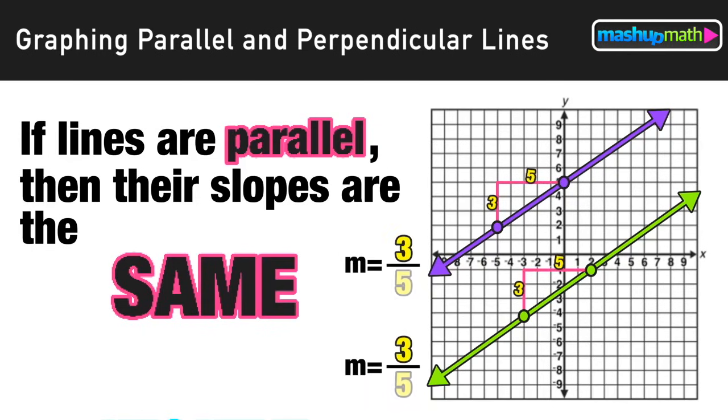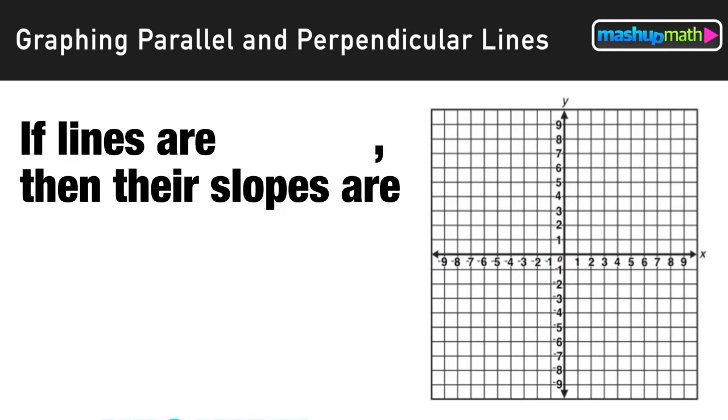Now since these lines have the same slope, we can say that they are parallel because they are increasing at the same pace and therefore by definition they will never intersect. However, if lines are perpendicular, that means that they form a right angle.